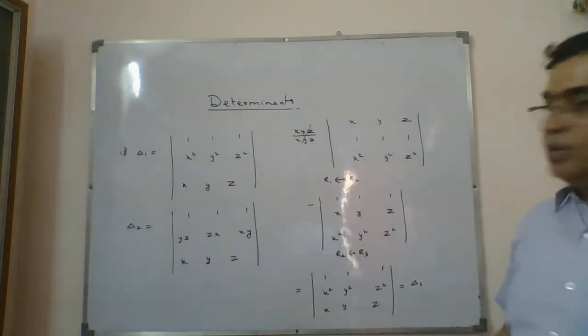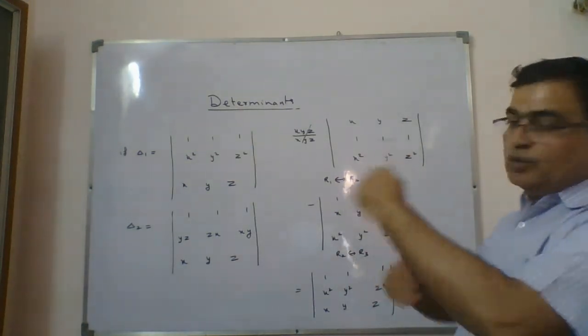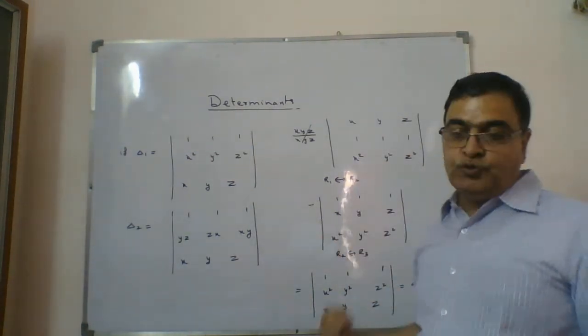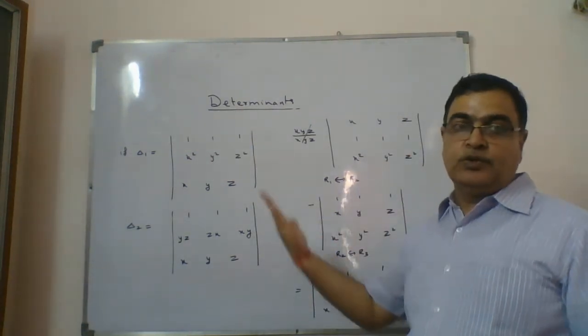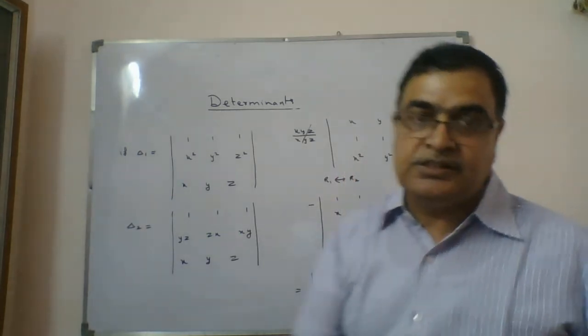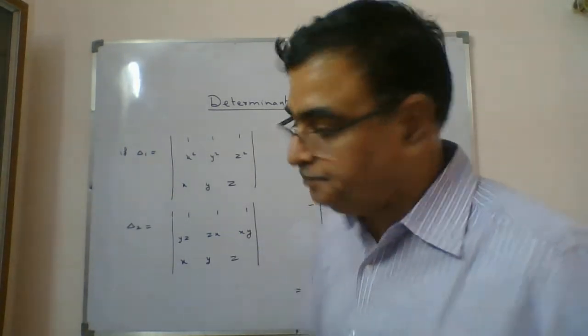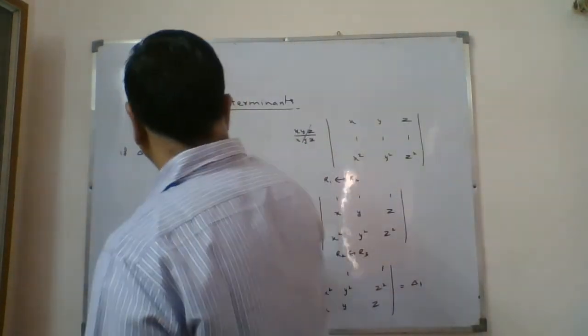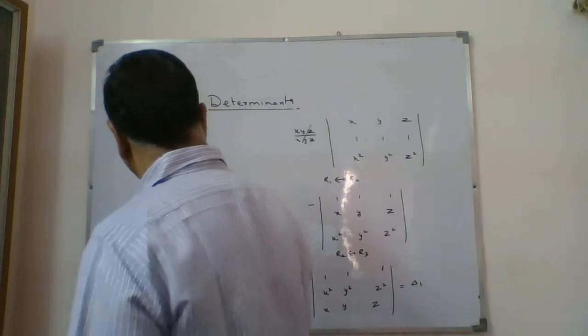You started with delta 2 and arrived at delta 1, so delta 1 equals delta 2. This is how you use determinant properties to prove two determinants are equal. Now one more question of this type — please note it down.